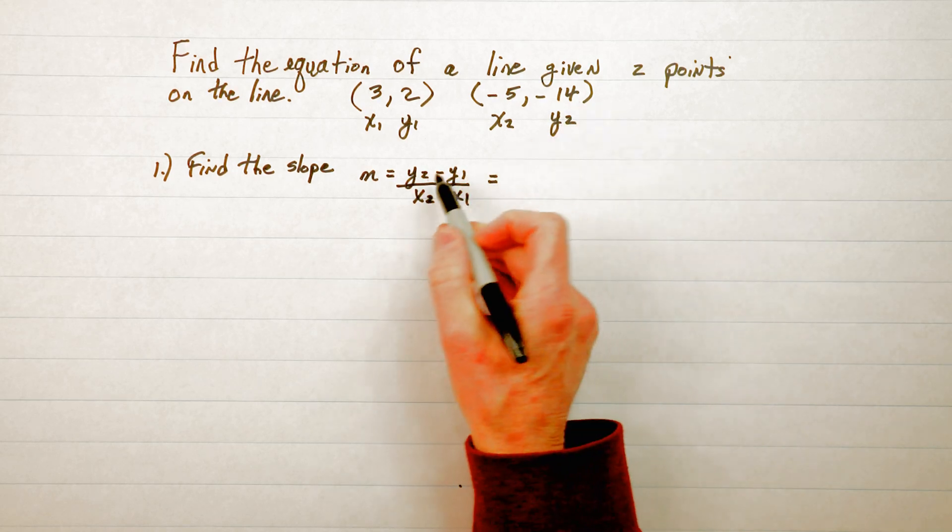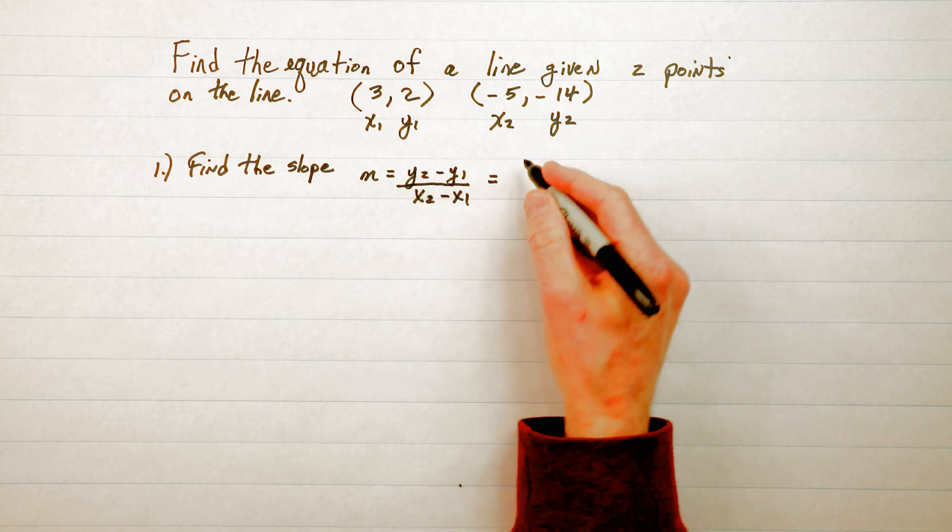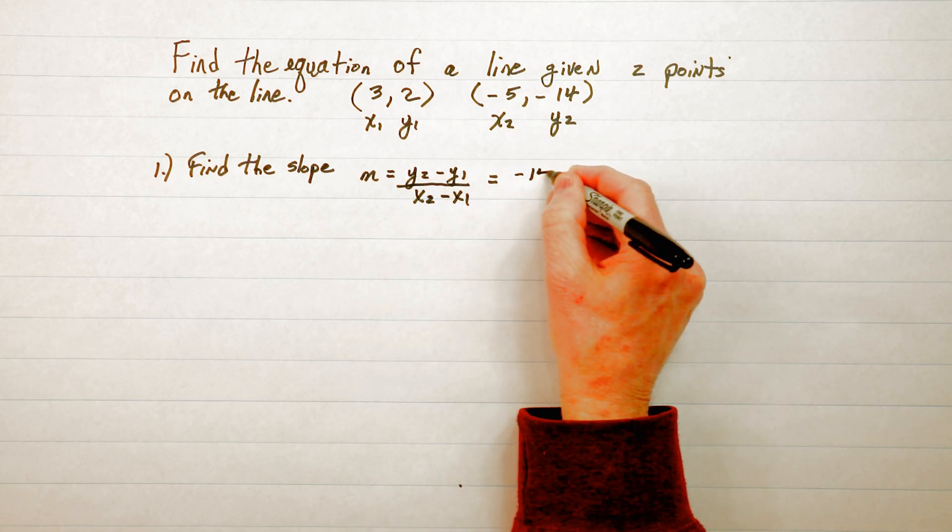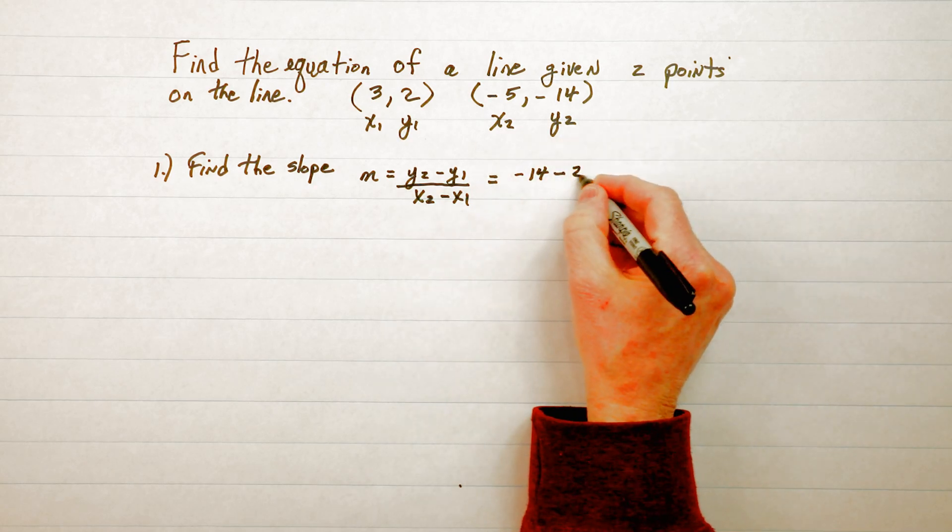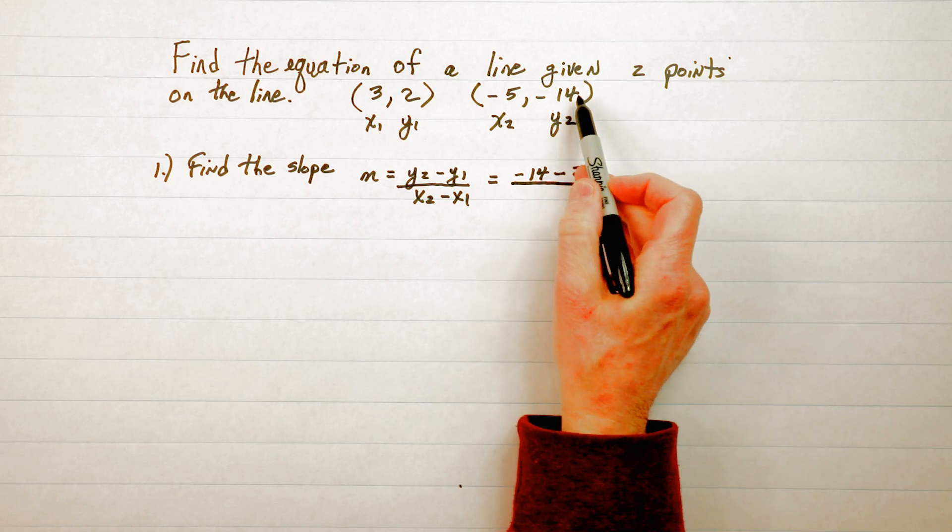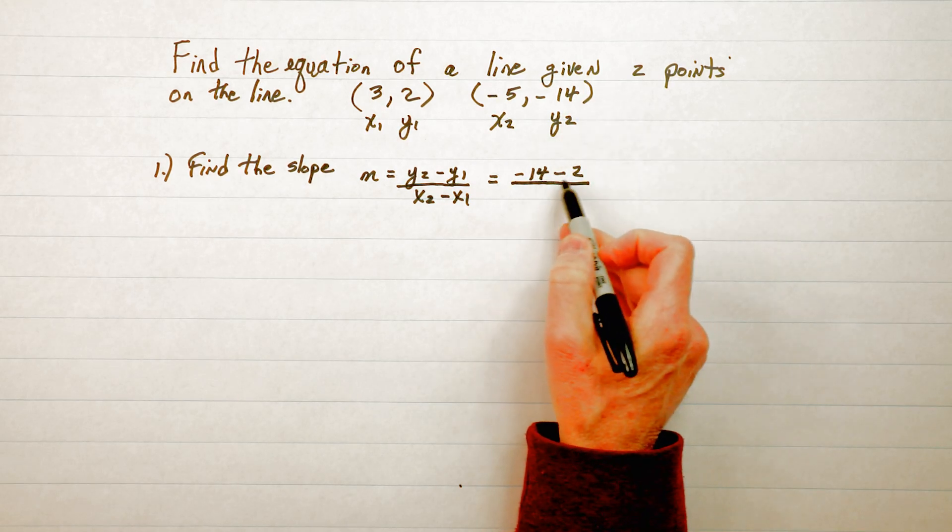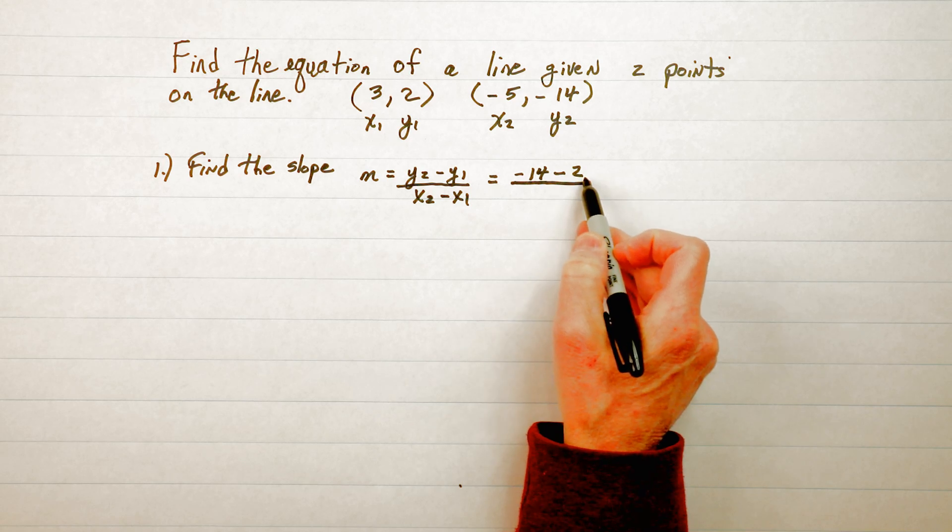So y₂ is the first number in the formula and y₂ is -14 and we have to subtract y₁ which is 2.